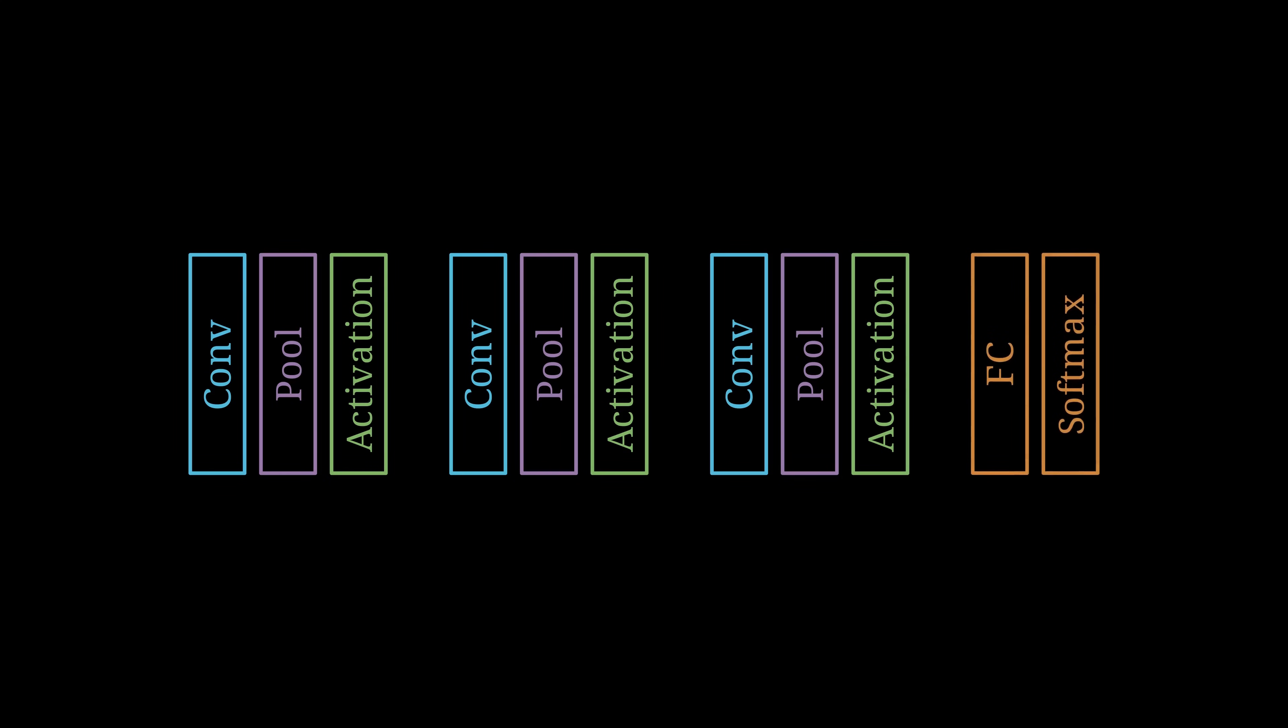Very broadly speaking, a convolutional neural network for recognizing images is built as follows. We have some amount of convolutional layers. After each of those, we put a pooling layer to downsample a bit and then we run the result through an activation function. At the very end we then have a final fully connected layer that does the classification and a softmax to transform the outputs into probabilities.